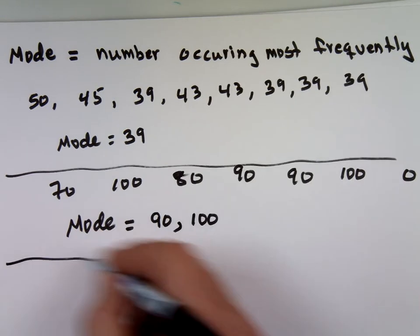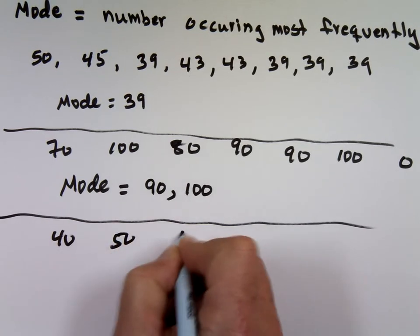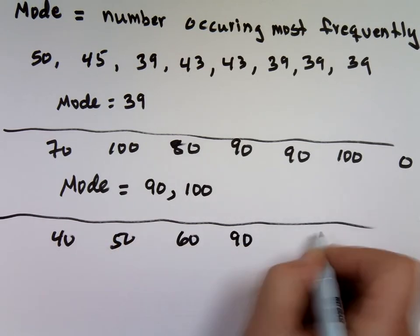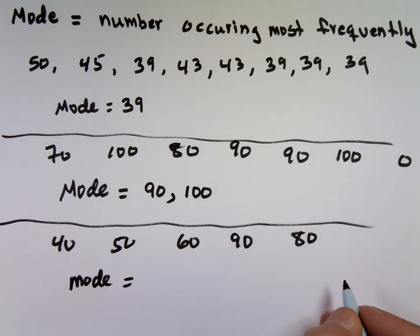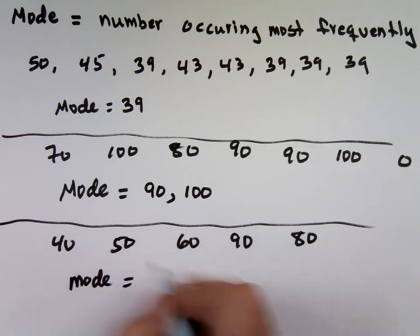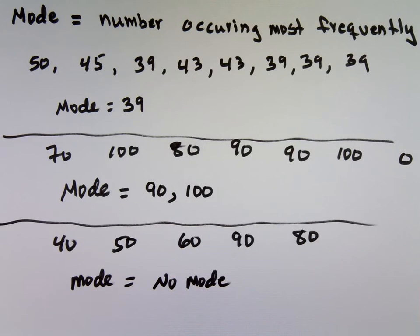On the other hand, if your scores were 40, 50, 60, 90, 80, what's the mode? There is no mode. Why? None of them showed up more often than the rest of them. So you could have no mode, one mode, two modes, three modes. Depends which one showed up more often. And that is the whole chapter.